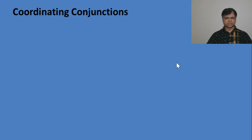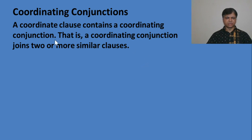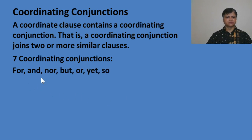Now, coordinating connections. We use coordinating connections to join two independent clauses or similar clauses. Coordinating connections relate to compound sentences. So we have to learn coordinating connections to learn about compound sentences. A coordinate clause contains a coordinating connection and joins two or more similar clauses. Every compound sentence contains coordinating connections. There are seven coordinating connections: For, And, Nor, But, Or, Yet, So.